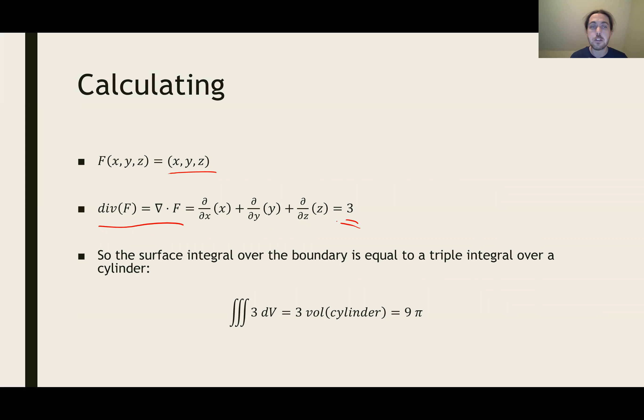which is significantly simpler. Calculating the surface integral over the boundary is the same as integrating 3 over the inside. That's 3 times the volume of a cylinder, and the volume of a cylinder whose height is 3 and whose base is a circle of radius 1 is 3π. So the total is 9π.